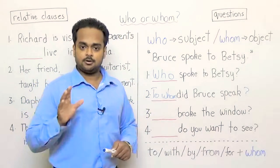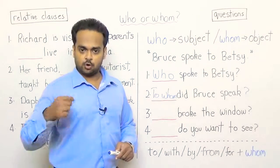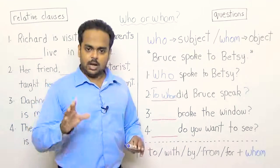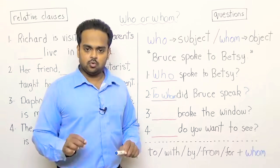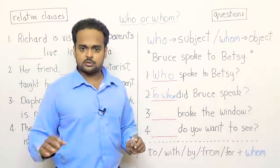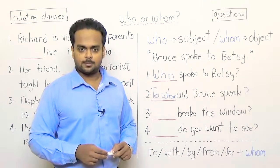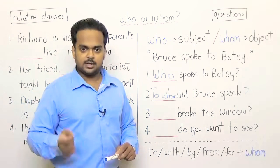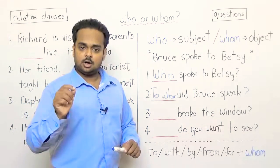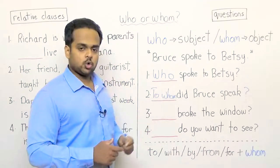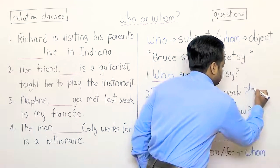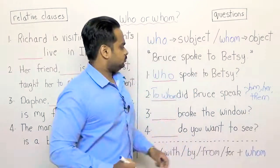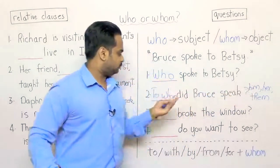At this point I'm going to give you a very simple rule that you can use in all situations to decide whether to use who or whom. And the rule is this: when you're making a question, think about the answer to that question. If the answer can be him, her, or them, then you use whom. So if the answer can be him, her, or them, you use whom.